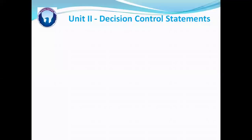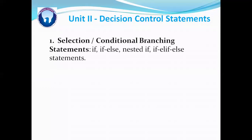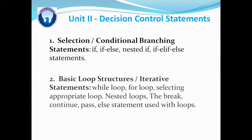Then we'll proceed to unit two: decision control statements. Initially, we are going to learn selection or conditional branching statements like if, if-else, nested if, if-else-if, etc. Then we are going to see the basic loop structures or iterative statements provided by Python — while and for loop. Then we are going to see how to select an appropriate loop for a particular task.